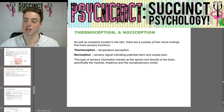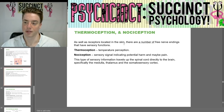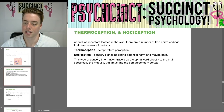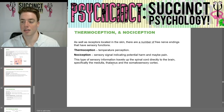Next we have thermoception and nociception. As well as receptors in the skin, there are a number of free nerve endings that have sensory functions. Thermoception is temperature perception. Nociception is the sensory signal indicating potential harm and possibly pain. This type of sensory information travels up the spinal cord directly to the brain — specifically the medulla, thalamus, and somatosensory cortex.